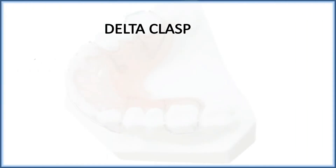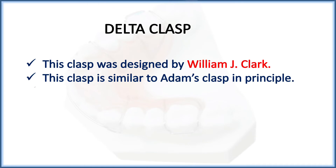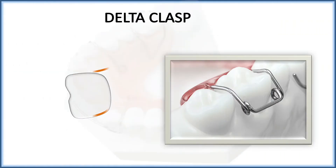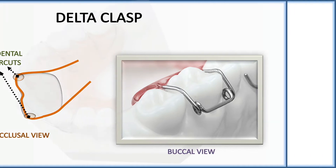The next clasp is the delta clasp, designed by William J. Clark. This clasp is similar to Adam's clasp in principle — it engages the interdental undercut. In the figure we have an occlusal view of the delta clasp showing how it engages the interdental undercut, and the next figure shows a buccal view.